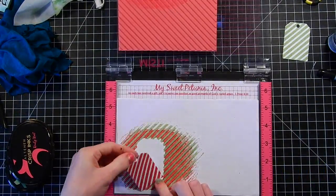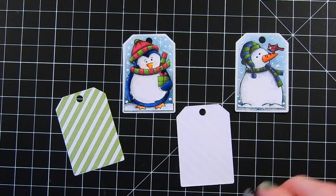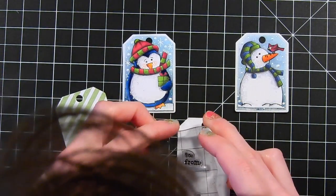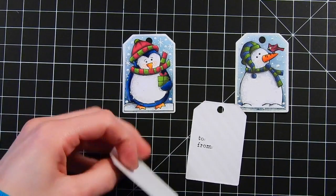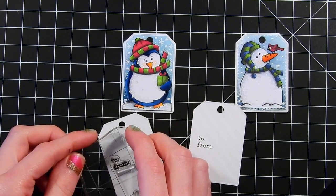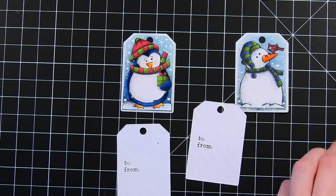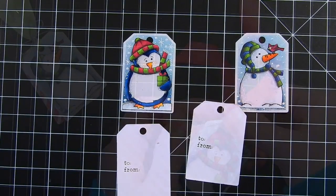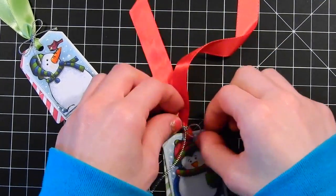We'll go ahead and attach these to our previously made tags but before I do that I'm going to be stamping this To and From which is also from the Jolly Tag stamp set. I'm just going to stamp that onto the back here using some black ink and then I'll go ahead and attach the tags to each other.